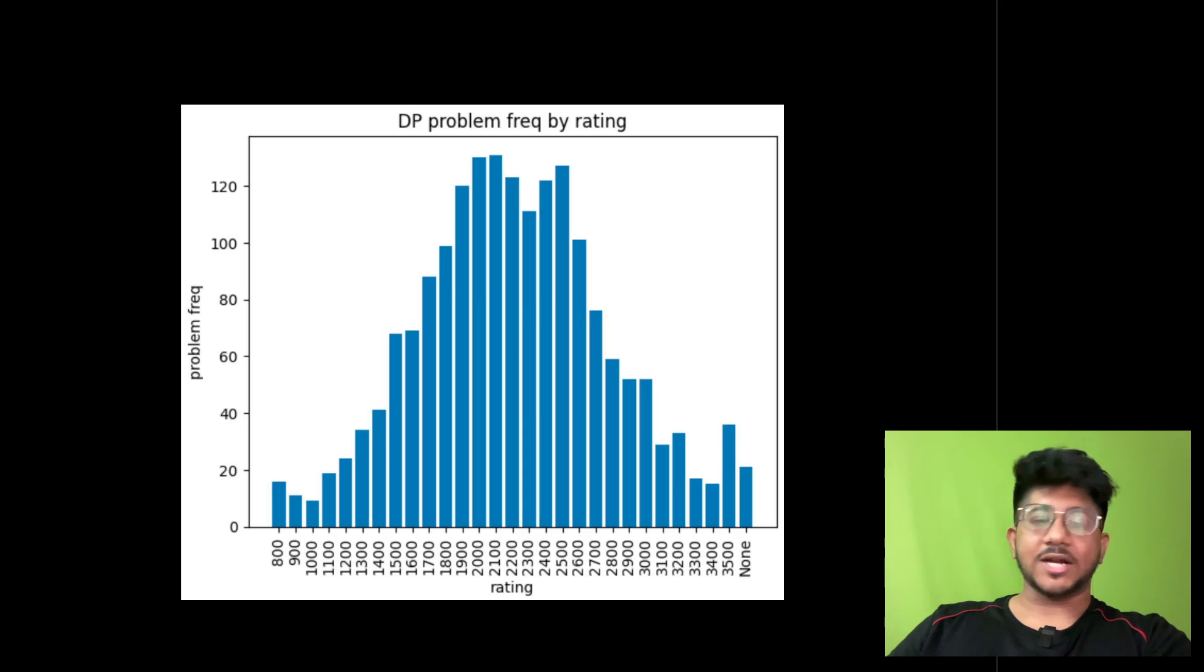People come and tell me, Vivek, I need to practice DP, my DP is weak. Where exactly is DP coming? Because if you see the distribution, most of the DP problems that you see on CodeForces are in the rating range of 1500 to 2900. How exactly is your rating getting determined by DP problems when there is very little DP problems being asked in 800 to 1200 rating range? So it's not really lack of initial knowledge of topics. It's practice on correct topics.